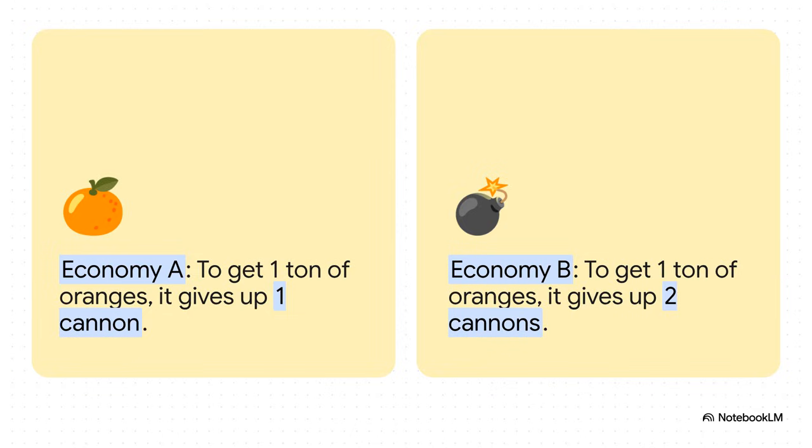But now look at economy B. To make their 10 tons of oranges, they have to give up 20 cannons. You do the math. That means for every one ton of oranges, they give up two cannons. Wow. Their cost is literally double that of economy A.